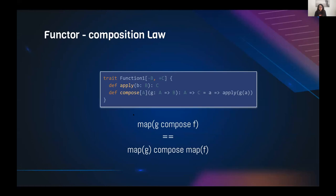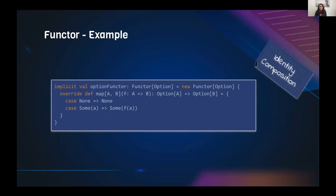To verify the composition law for a functor: map(g compose f) should equal map(g) compose map(f). This ensures there are no side effects in map. For example, if map contained a println, running map twice would print two lines — so the two sides would not be equal, violating the law. Following functor laws tells us that types interacting with the outside world and having side effects cannot be functors.